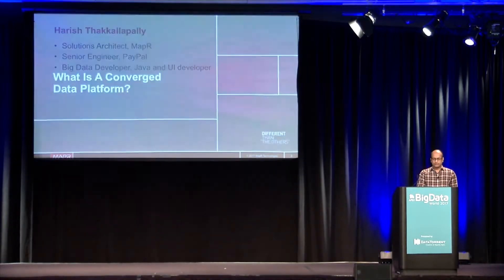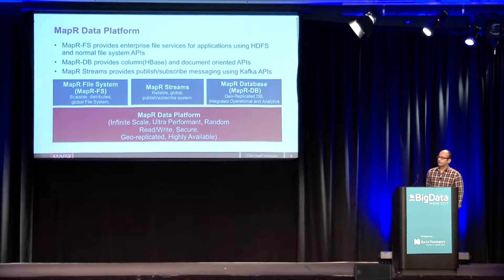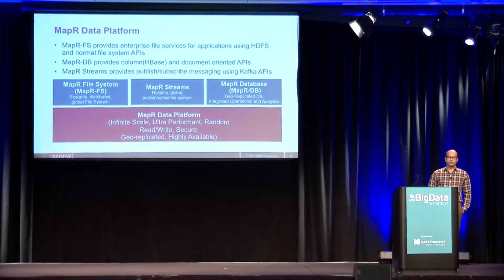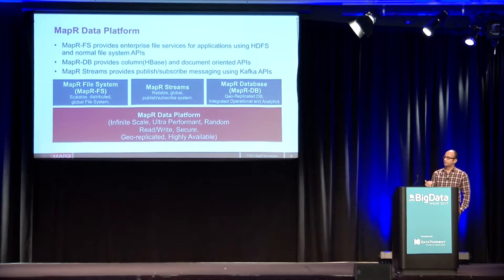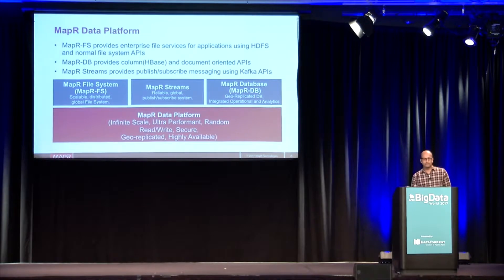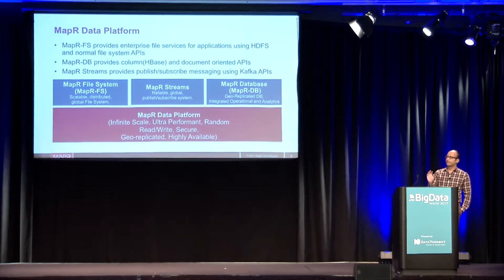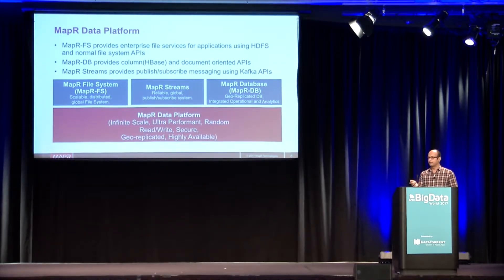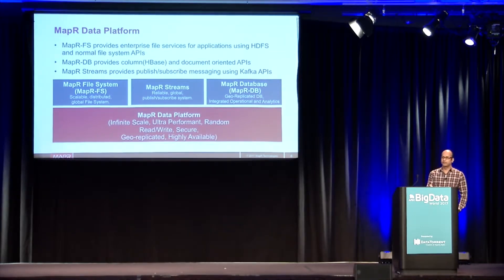Now let's see what a converged data platform is. In MAPR, we have three different components. The first one is the MAPR file system, which is similar to HDFS but has extra capabilities — it's a read-write capable file system. You can do read and write directly and use any Linux tools to write into that file system.